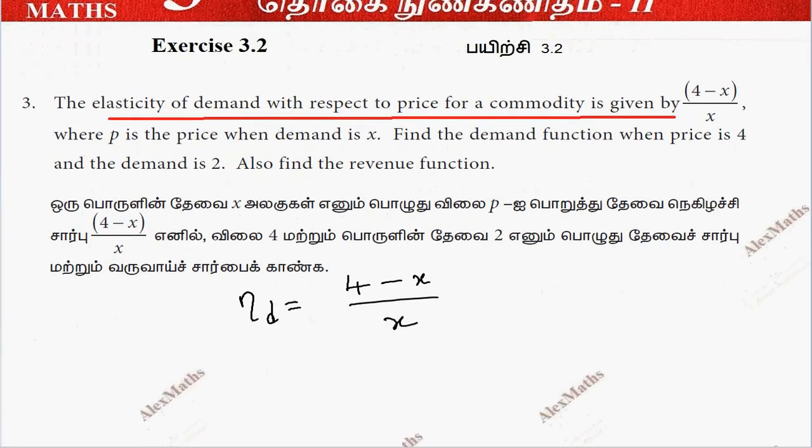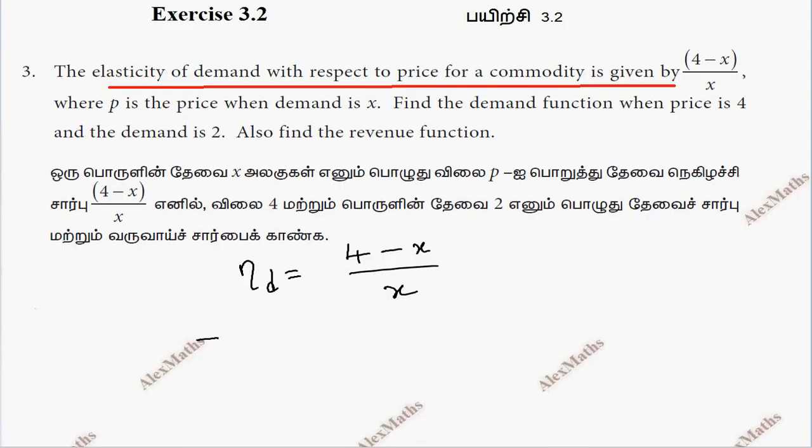Using the formula minus p by x into dx by dp is equal to (4 minus x) by x, where p is the price and demand is x. We need to find the demand function when price is 4 and the demand is 2.